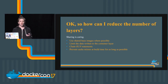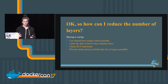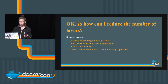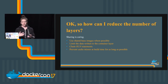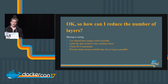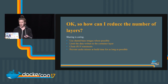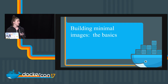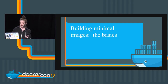So how can I reduce the number of layers? Some really high-level tips: use shared base images wherever possible, limit the data you're writing to that read-write container layer, chain your run statements, and prevent cache misses at build time for as long as possible. We're going to cover all of these in detail. Let's cover our basics — not language-specific — of how we can build some more minimal images.